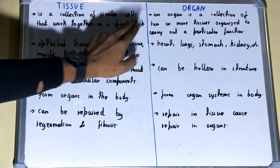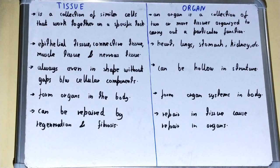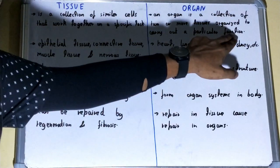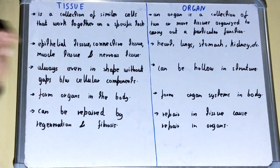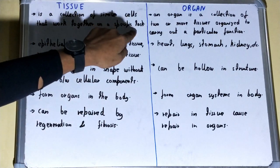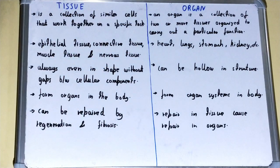Now there is a difference between a specific task and a function. For example, the kidney is an organ whose work is filtration of body fluids. A function can include many tasks, where each task is performed by different tissues.